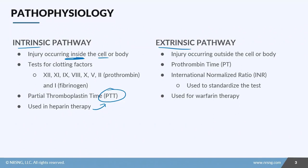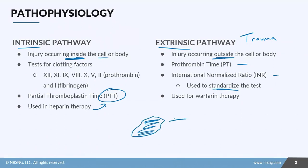With the extrinsic pathway, an injury occurs outside the cell or body — think trauma. This initiates the coagulation cascade, and we use PT and INR to test for this. A blood sample is introduced to something called a tissue factor, which helps form a fibrin clot. This can come from human, bovine, or porcine sources. They measure the time, plug it into a formula, and it gives you INR.